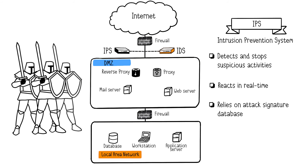One last point, because there is a lot of confusion about it: the difference between a firewall and an IPS. The role of an IPS is to detect attacks on a network from an attack signature database, like an antivirus, and block them if necessary. The role of a firewall is different — its purpose is to filter access by defining allowed or prohibited communications.